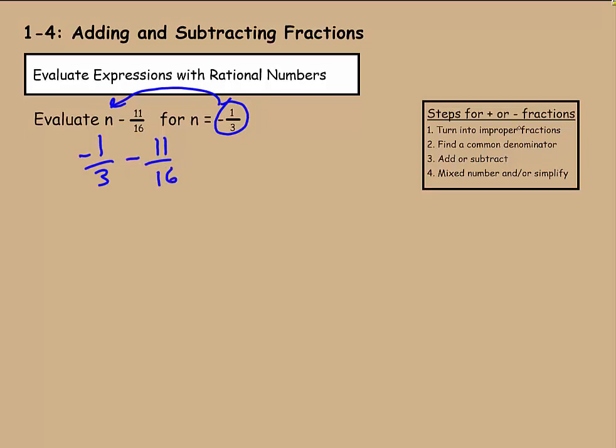They're not mixed numbers, so we can skip step 1, but we can find a common denominator. 3 and 16, I can't think of one right away, so I'm going to multiply them together. 3 times 16 is 48. So that'll be our multiple. 3 goes into 48 sixteen times. So negative 1 over 3 times 16 over 16 minus 11 over 16, so that'll be times 3 over 3. Negative 1 times 16 is negative 16. 3 times 16 is 48. 11 times 3 is 33. 16 times 3 is 48. And remember, we're subtracting here.